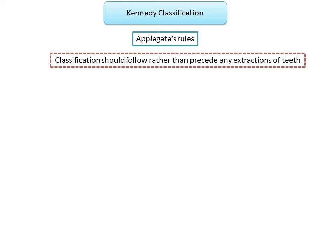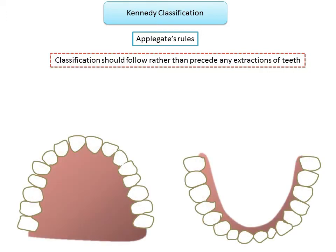For example, if the molars are missing this would be a Class 3 with teeth present anterior and posterior to it, but if the third molars also need to be extracted, it becomes a Class 2. Extraction of the third molar changes the classification, so any required extractions must be done before planning the RPD.